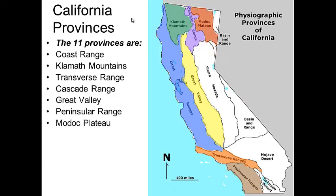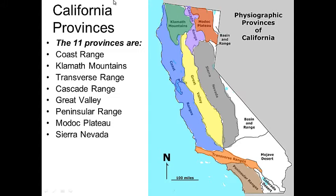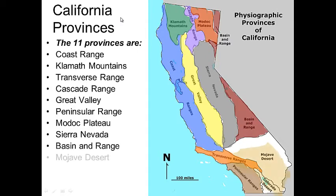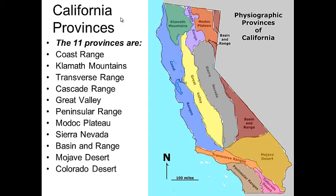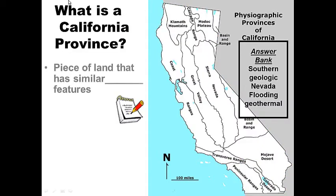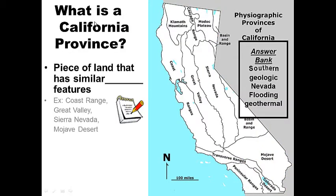Other provinces include the Peninsula Range, the Modoc Plateau — made up of lava flows — the Sierra Nevada mountains where Lake Tahoe is and we love to go snowboarding, the Basin and Range, the Mojave Desert, and the Colorado Desert.